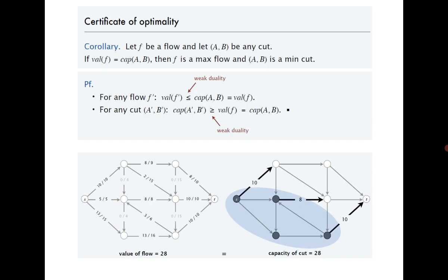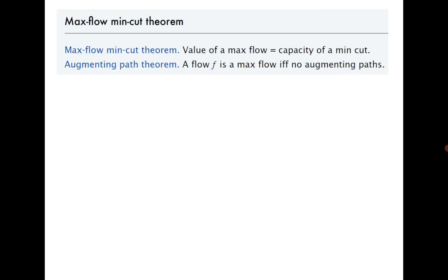Now there comes a very interesting question. We have already seen that the Ford-Fulkerson algorithm gives us the maximum flow, and we are claiming that if the value of the flow equals the capacity of A-B, then A-B is a minimum cut. The question that needs to be answered is: how do we know there exists a minimum cut, or how do we find a minimum cut?